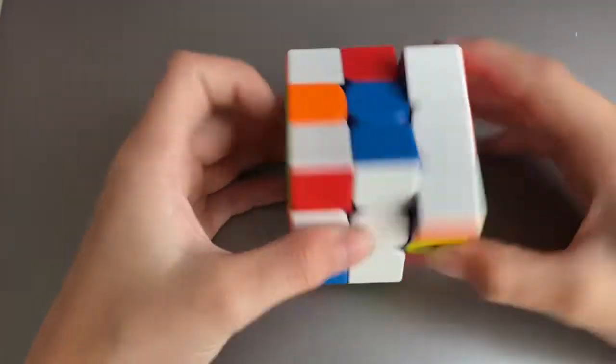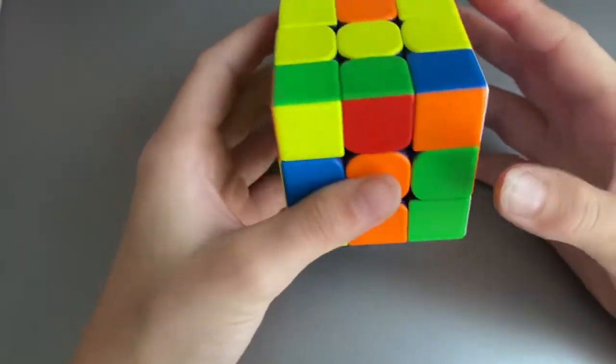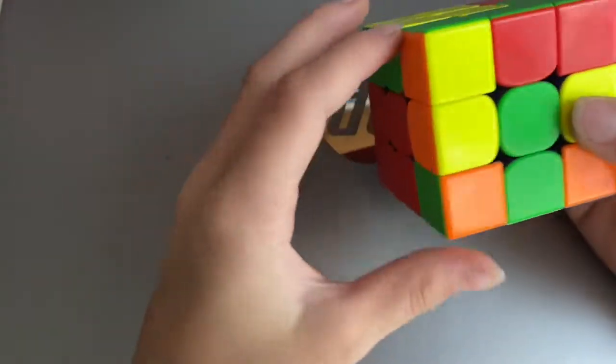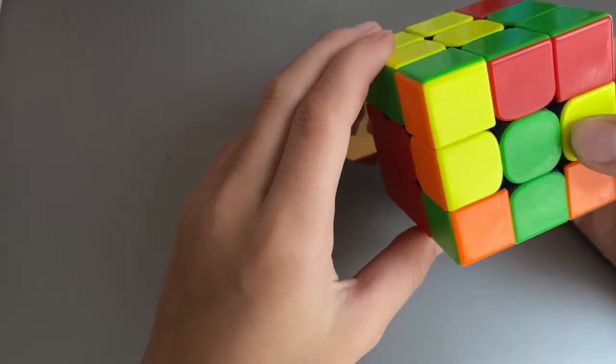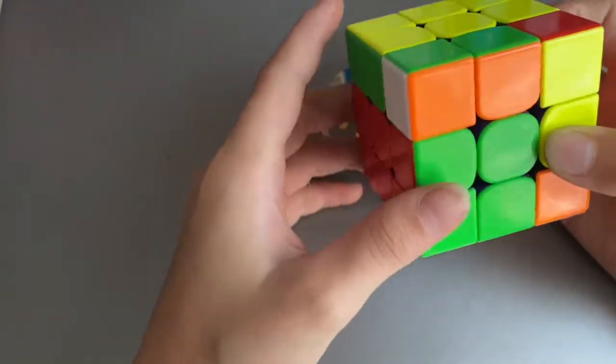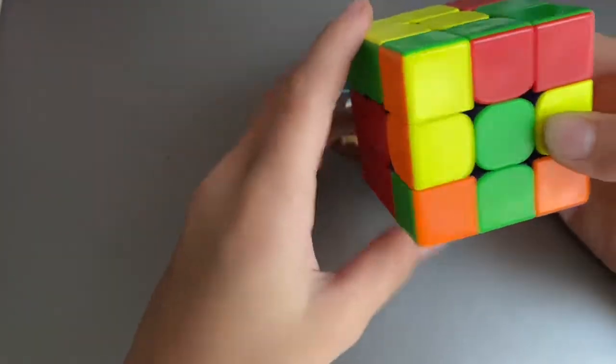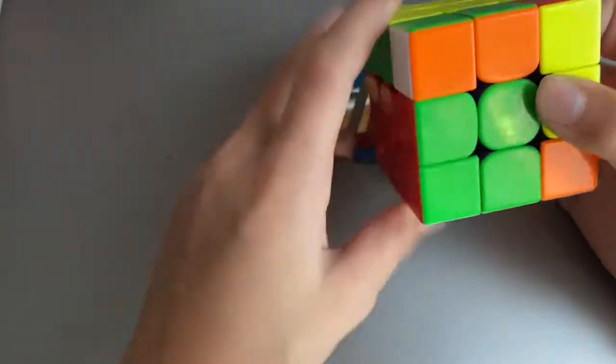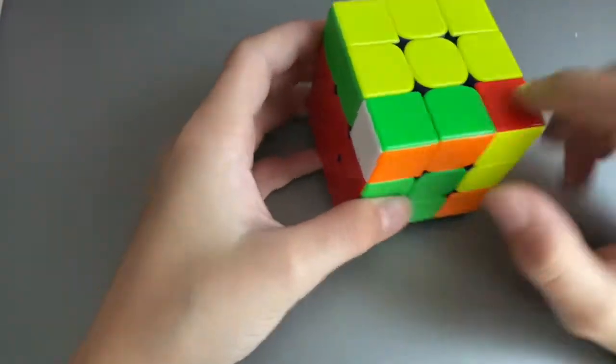You should do this. Because there's a simple RU U prime, R U, R prime U prime. And then of course, that makes this pair. And putting that pair in makes this pair.